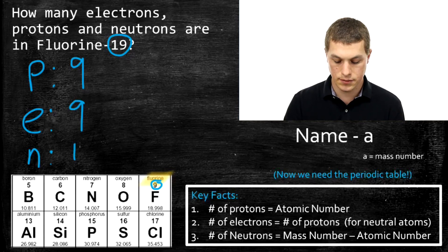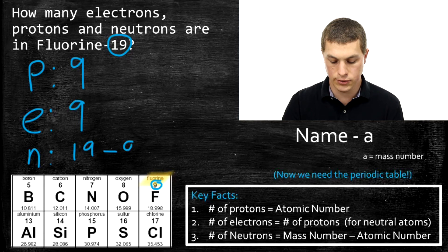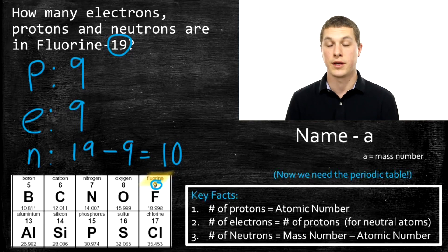So all we do is 19, the total number of things in the nucleus, minus the number of protons in the nucleus, 9. And that's going to give us 10, and that's how many neutrons are in our nucleus. So even with the shorthand of isotope notation,